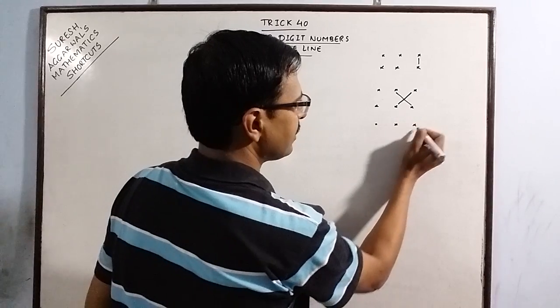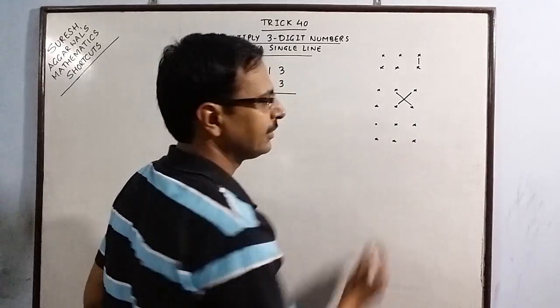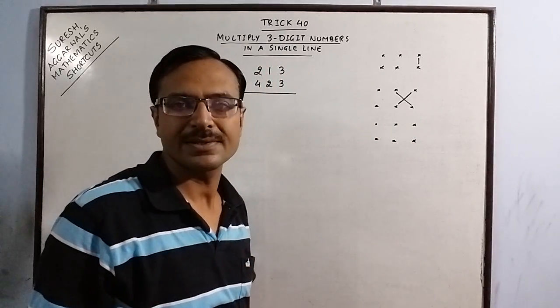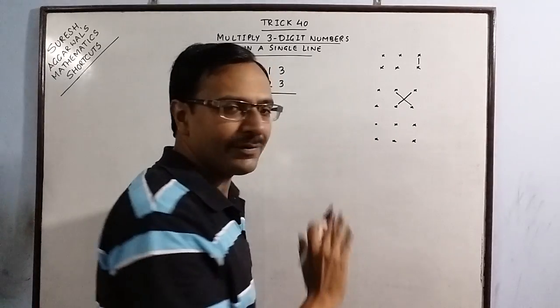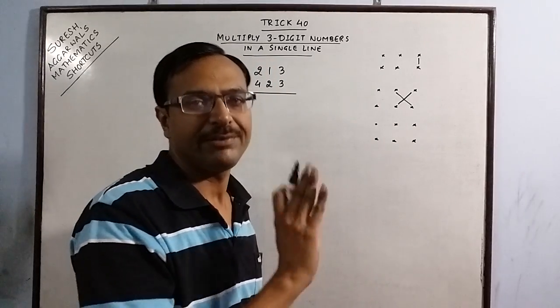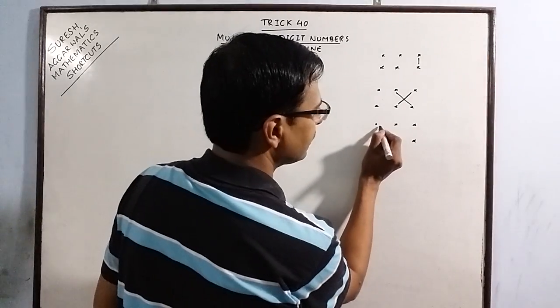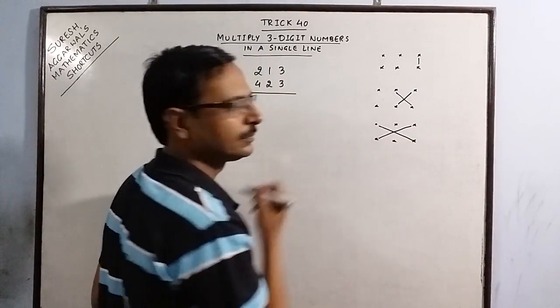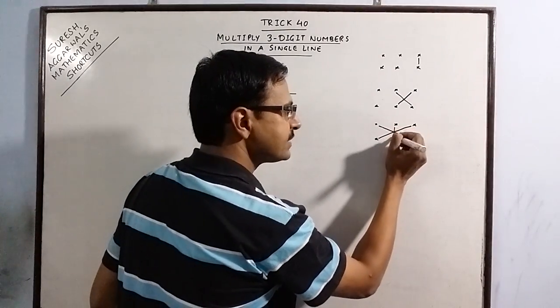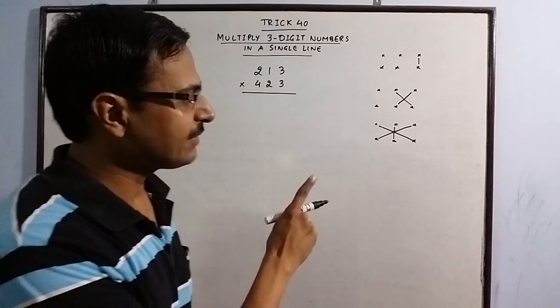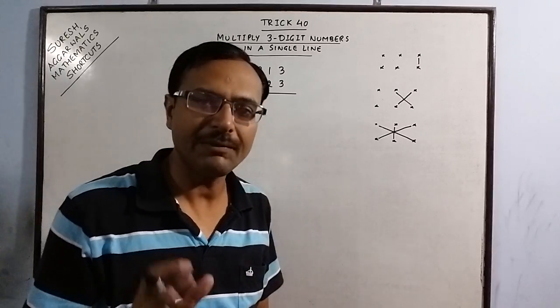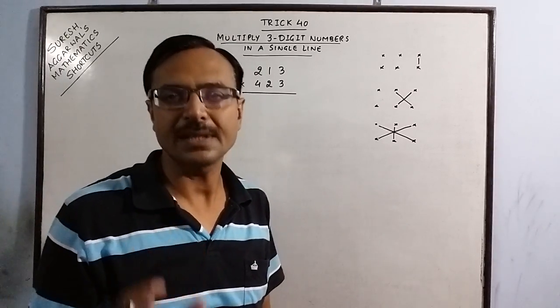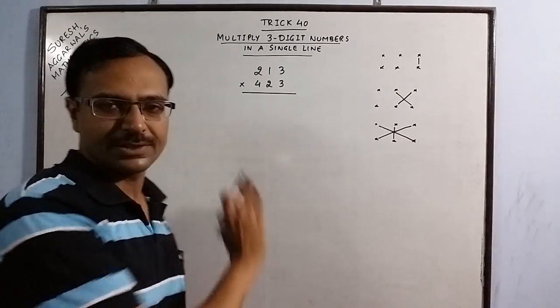In the third step we will have three products. We always multiply the first and the last like this. The first and the last and the middle two terms. So this will give us three products and we have to find the sum of these three products to get the third digit.